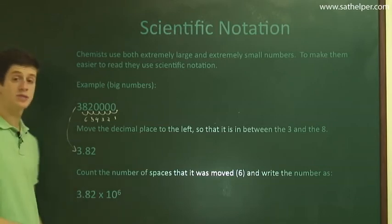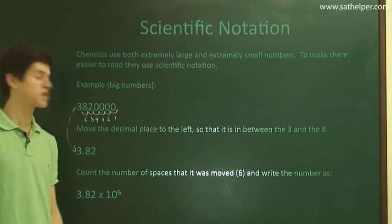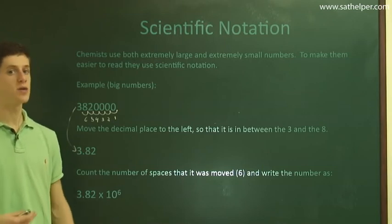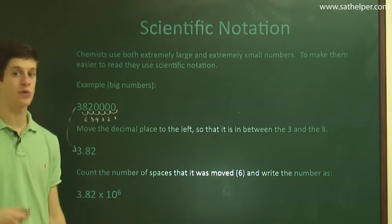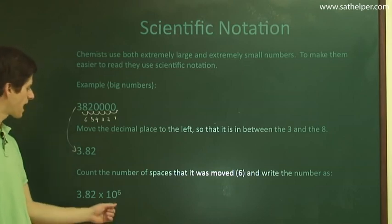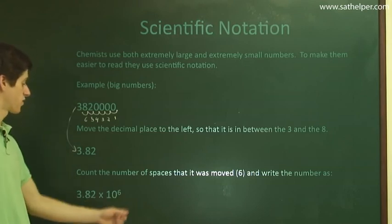And so 3.82 times 10 to the 6 might not seem much more simple than 3,820,000. But if you're dealing with numbers that have many more zeros, let's say 20, 30, 40, 1,000 zeros, well, you might have exponents that are 20, 30, 40, 1,000.